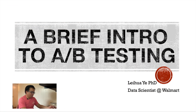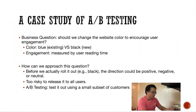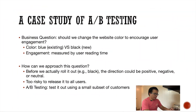Let's get started. Let's say our business partners want to change the website color from blue to black and they want to understand how this new change will affect user engagement. User engagement is measured as user reading time, or you can measure it using another metric, as long as you justify your choice and the metric is consistent with your hypothesis.